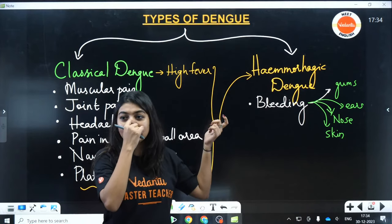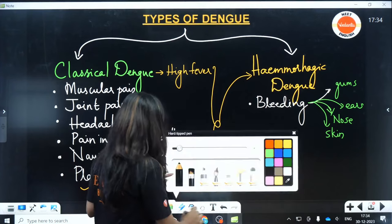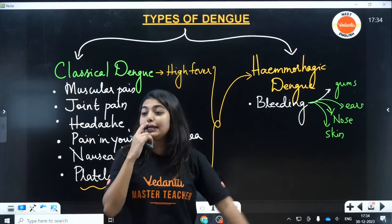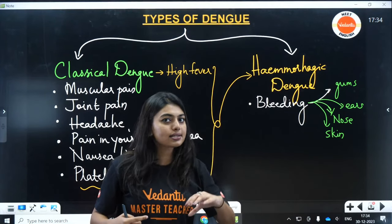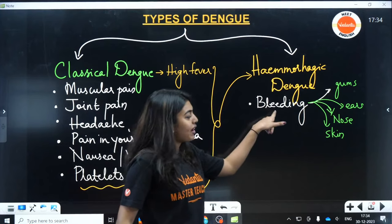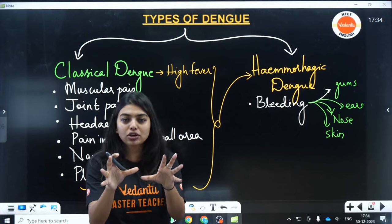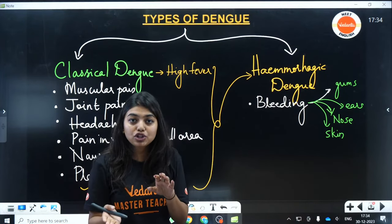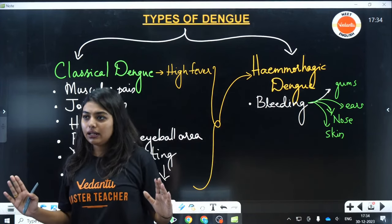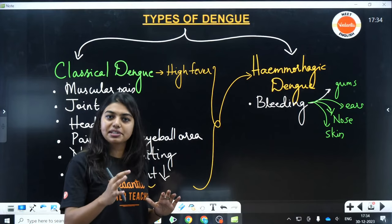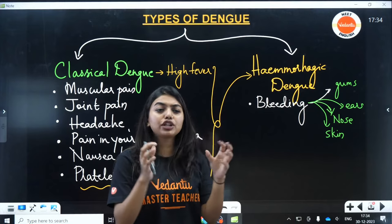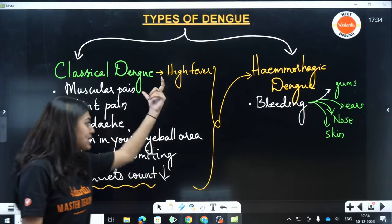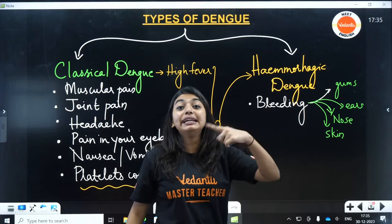Why is bleeding happening? Platelets count has decreased. When capillaries rupture, platelets normally do blood clotting. But because platelets count has decreased, if capillaries rupture, bleeding will happen — the clotting factor is missing. Hemorrhagic Dengue has all the symptoms of classical Dengue, but additionally there is bleeding. Even a small scratch or wound will lead to excessive bleeding. In very severe cases, a person can also die.